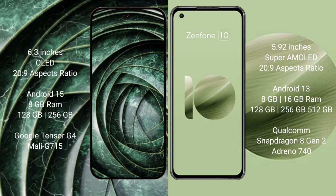Google Pixel 9a runs on the Android 15 operating system. Asus Zenfone 10 runs on the Android 13 operating system. Google Pixel 9a comes with 8GB XM20, 8GB 56GB internal storage, and a Google Tensor G4 processor with 8GB Mali GPU.